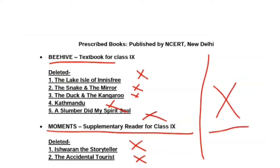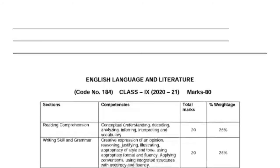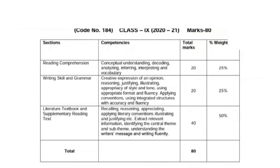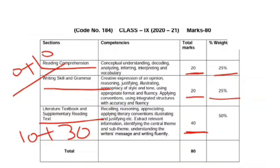Now let's look at the marking scheme for this session, in which quite a lot of changes have been made. Reading comprehension carries 20 marks — two unseen passages of 10 marks each, with a weightage of 25%. Grammar and writing also carry 20 marks with a weightage of 25%. For literature: 10 marks from scene passages (MCQ based) plus 30 marks from literature questions, totaling 40 marks with a weightage of 50%. So your total question paper will be of 80 marks.